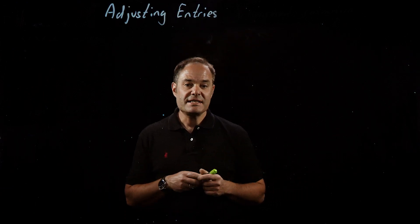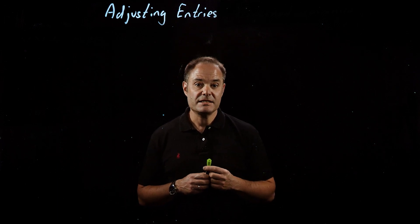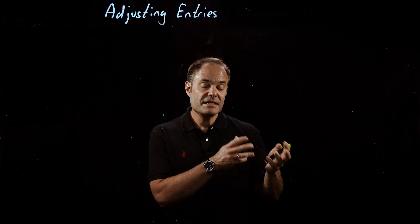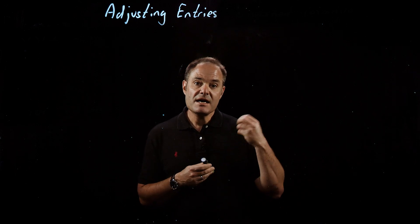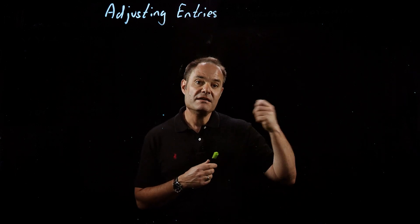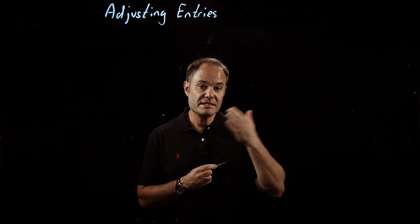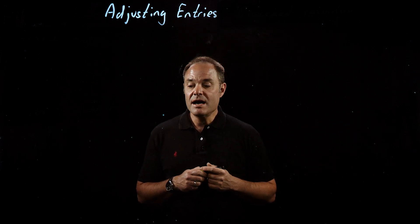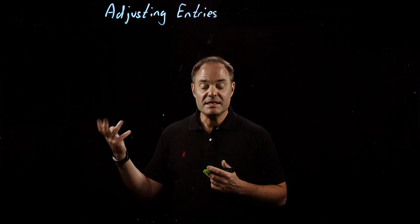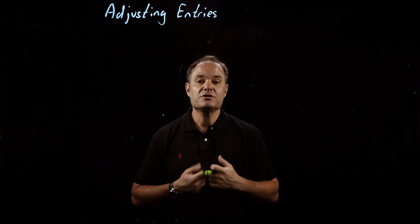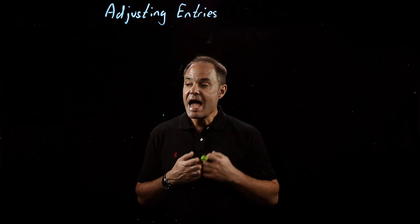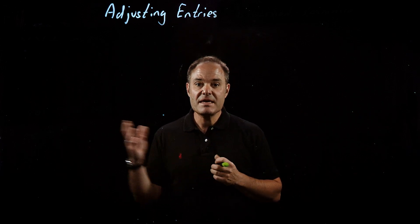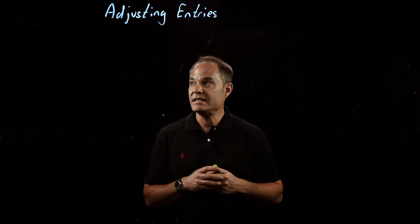Hi, I'm Mark Farber, and this is Accounting Fundamentals. In our last video, we started to talk about adjusting entries, and we talked about prepaid expenses. Remember that a prepaid expense is nothing more than an expense that a company has paid for in advance, and then records the expense on a regular basis over a number of months or years. Initially, the prepaid expense is an asset because the company is owed a certain service, and as they accrue that over time, that asset becomes an expense on the income statement.